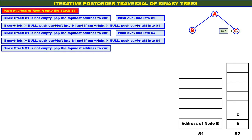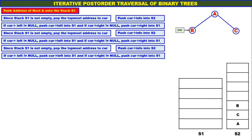Since stack S1 is not empty, pop the topmost address to CUR. Topmost address is address of node B — pop it and assign it to CUR. Push CUR info into S2, so B is pushed onto S2. B's left is null, therefore there is no push. B's right is null, therefore there is no push.